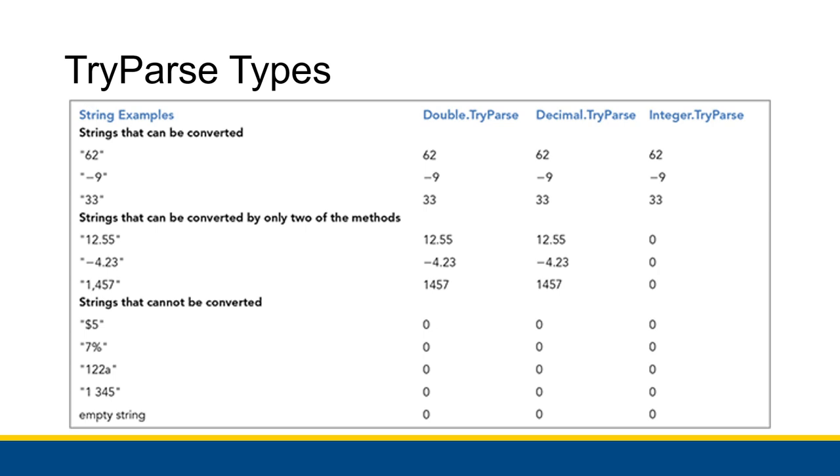Some strings contain numbers that can be converted into any of the types using their TryParse methods. So for example, 62 or negative 9 or 33 can all become doubles or decimals or integers. They are all valid. However, numbers with decimal points cannot become integers, but they can become decimals or doubles. So 12.55 and negative 4.23 are not valid integers, but valid doubles and valid decimals.